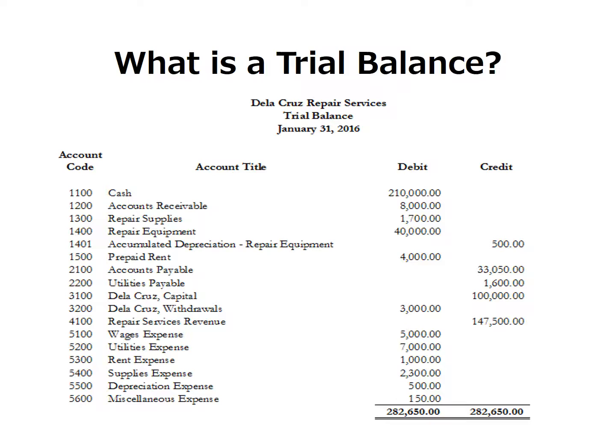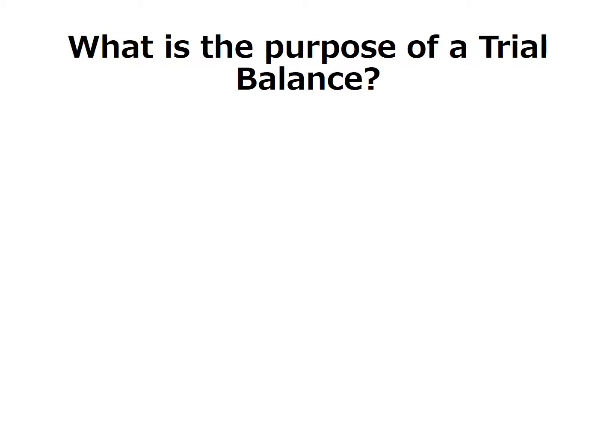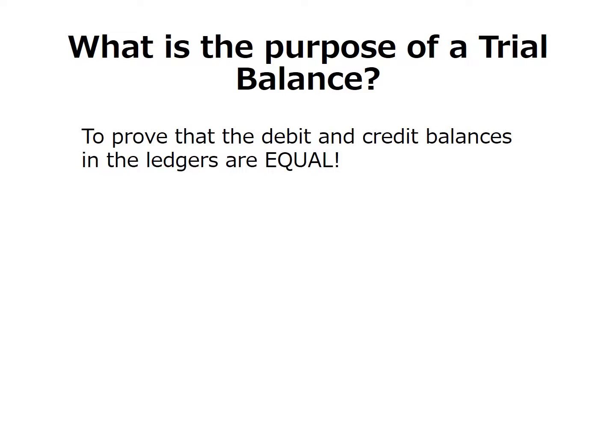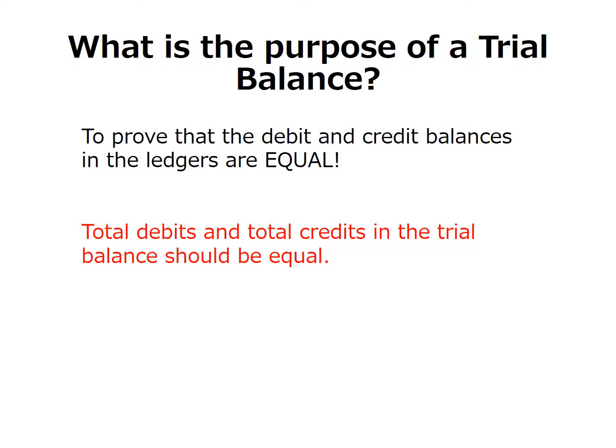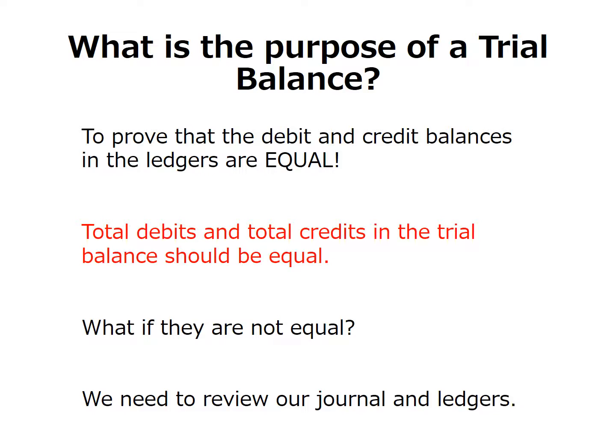If you would notice, the total amount under the debit column is equal to the total amount under the credit column. The purpose of a trial balance is to prove that the debit and credit balances in the ledgers are equal. Total debits and total credits in the trial balance should be equal. What if they are not equal? We need to review our journal and ledgers.